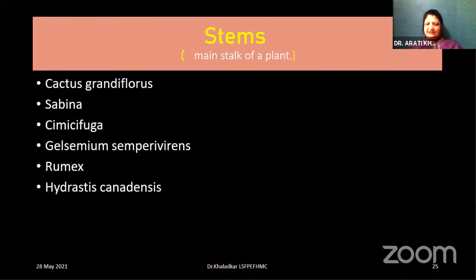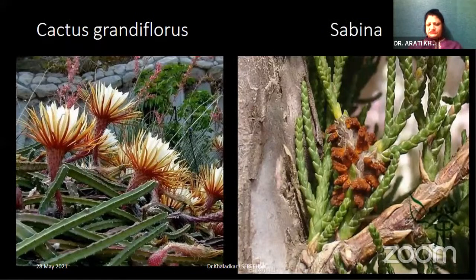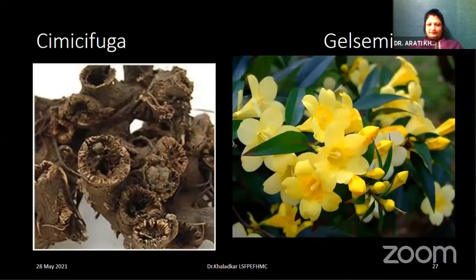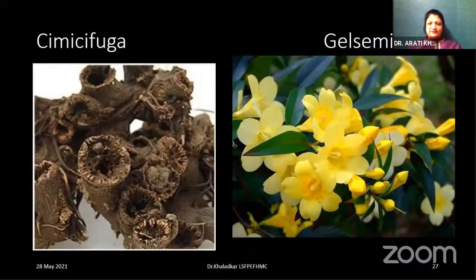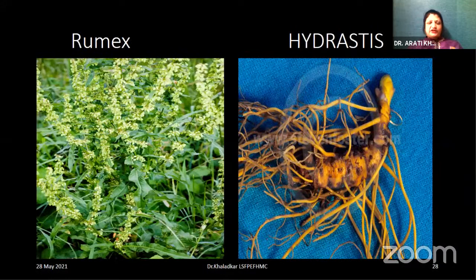Next we go on to stems — the main stock of a plant. We have about six drugs prepared from the stem. The first is Cactus grandiflorus, also called night-blooming cereus. Then Sabina. Then Cimicifuga, also called Actaea cimicifuga or Rathymoza. We have Gelsemium, a beautiful yellow-looking yellow jasmine flower — a very good drug for all types of apprehension. Next, Rumex, a very good respiratory drug for dry cough. Hydrastis is one more example.